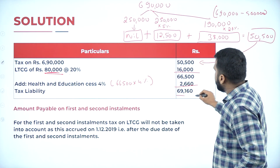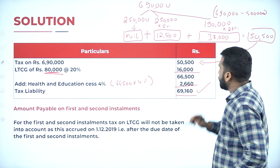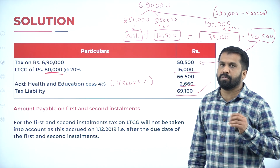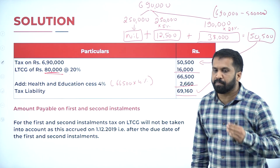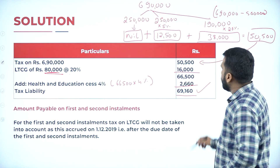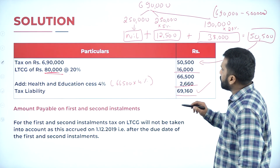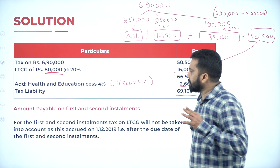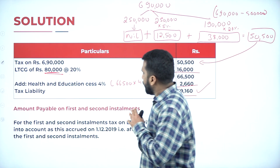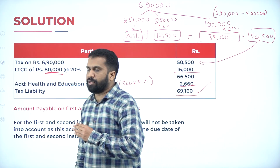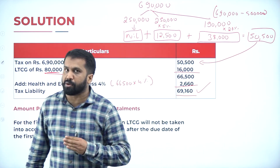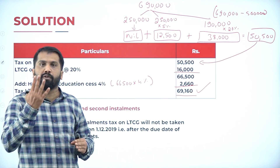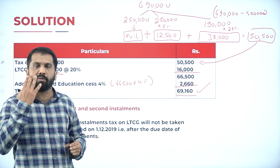Education cess at four percent on sixty six thousand five hundred: sixty six thousand five hundred multiplied by four percent equals two thousand six hundred sixty. Total tax: sixty six thousand five hundred plus two thousand six hundred sixty equals sixty nine thousand one hundred sixty. This is your total advance tax payable for Problem 4.